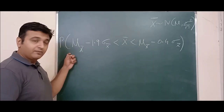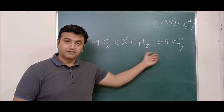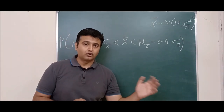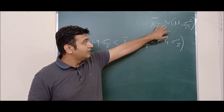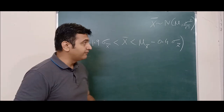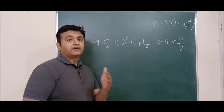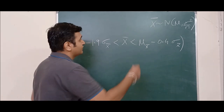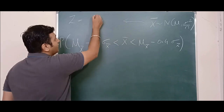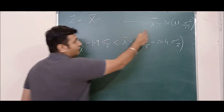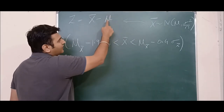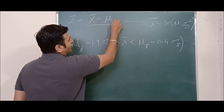We need to find the probability that x̄ will lie in this interval. Whenever any random variable follows the normal distribution, we can always convert it into a standard normal variable using the transformation z = (x - mu) / sigma. For x̄, the transformation is z = (x̄ - mu) / (sigma / sqrt(n)), since the mean of x̄ equals the population mu and the standard deviation of x̄ is sigma over root n.